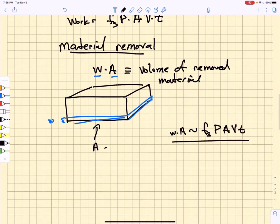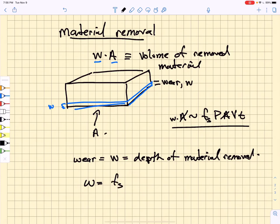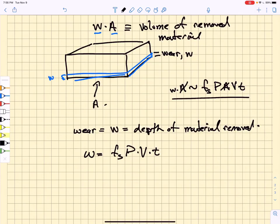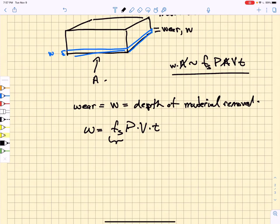This w times A is going to be proportional to the work that we are doing as we slide the block. So we get rid of these cross-sectional areas and we find that the amount of material removed w, the depth of material removed, is just going to be given by fs·P times v times t.